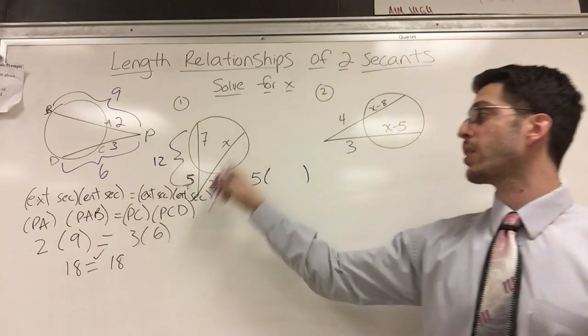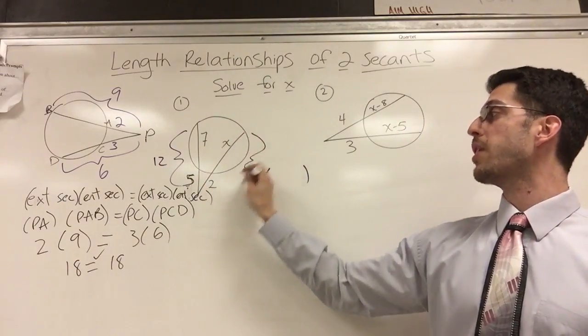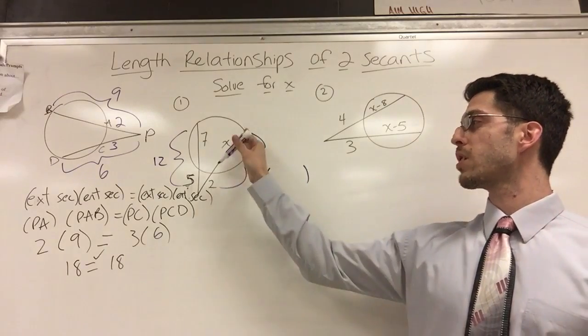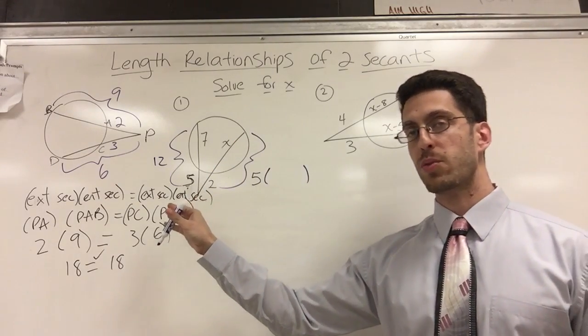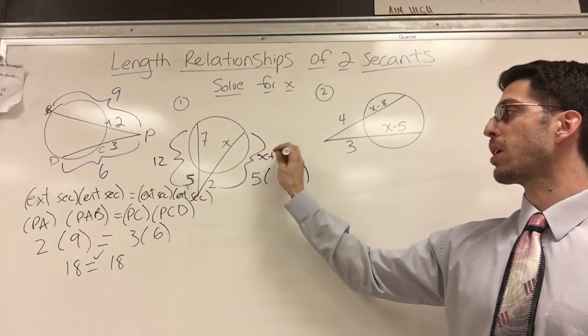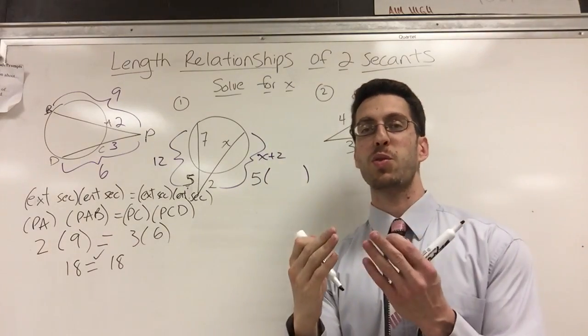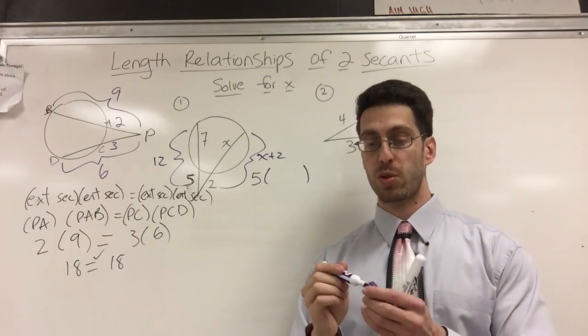So you've got to do that extra step yourself. And then you've got to come over here and do the same thing. You've got to figure out this whole thing, which is x and 2. What's that? x plus 2. Not x times 2, by the way. A lot of people like to say, oh, just put it together. It's 2x. No, no. It's x plus 2.